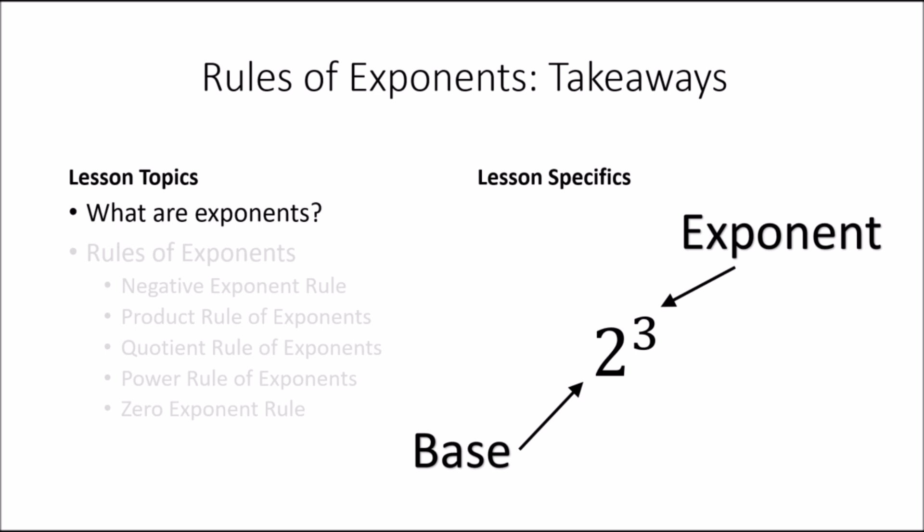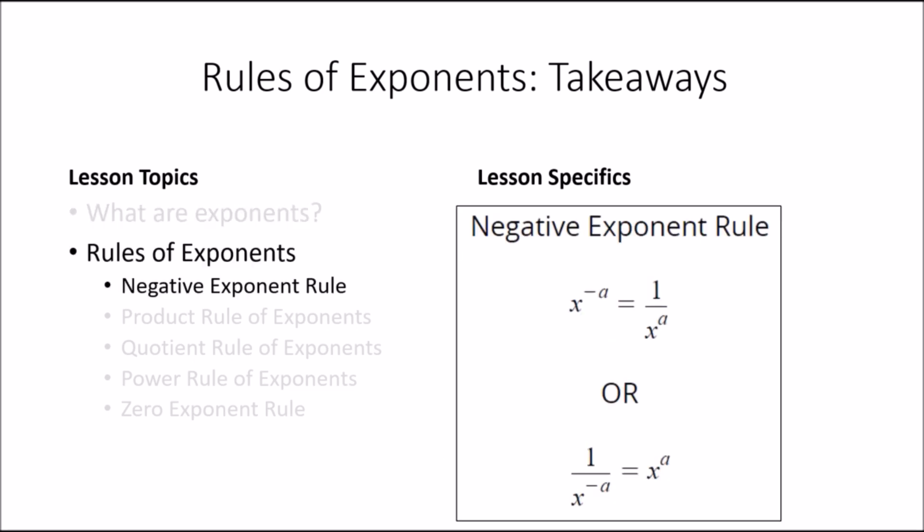Let's do a recap of our rules of exponents lesson. First, we learned that exponential terms have a base and an exponent, with the exponent written as a superscript. Next, we learned five rules of exponents. The first was the negative exponent rule: it tells us that we can change exponents from negative to positive if we move the exponential term from the numerator to the denominator, or vice versa.